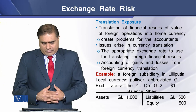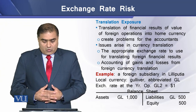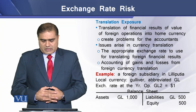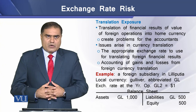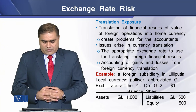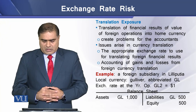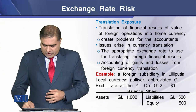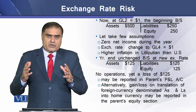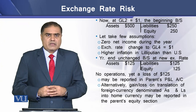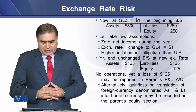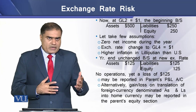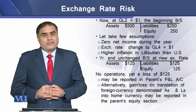Consider an example: a foreign subsidiary in 'Lillipsia' uses a local currency called the Gliwur (GL). The exchange rate at the start of the year is 2 GL per 1 US dollar. The subsidiary's opening balance sheet shows 1,000 GL in assets, 500 GL in liabilities, and 500 GL in equity. Translated into dollars at 2 GL per dollar, assets equal $500, with liabilities and equity at $250 each.